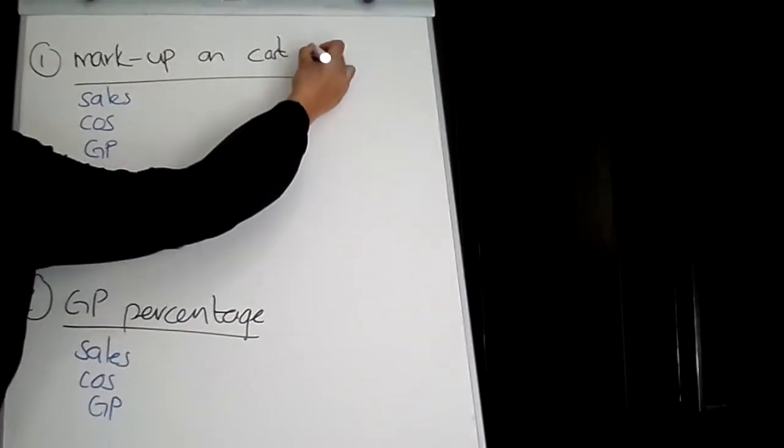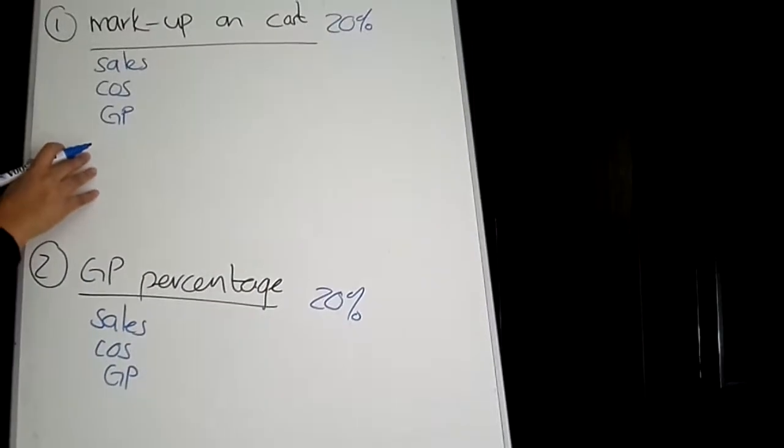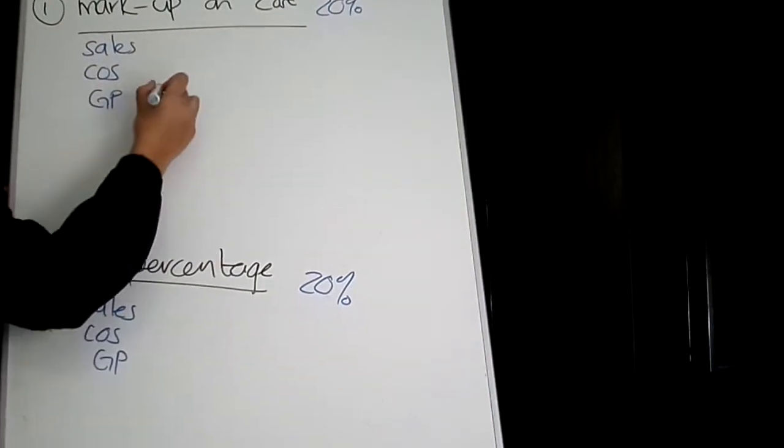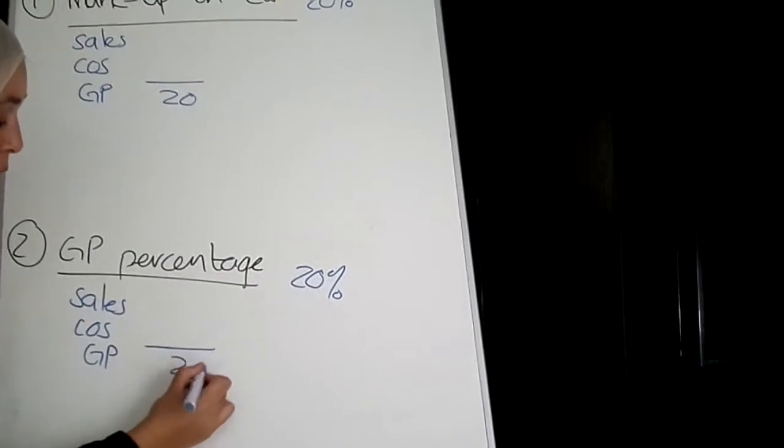So if I told you the markup on cost is 20% or the gross profit percentage is 20%, you need to use that in this calculation. If markup on cost is 20%, it means gross profit is 20, and the same here, gross profit is 20.